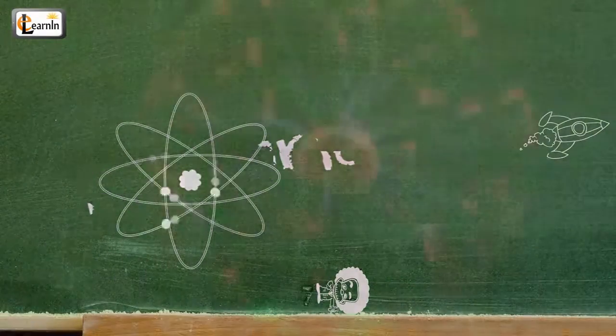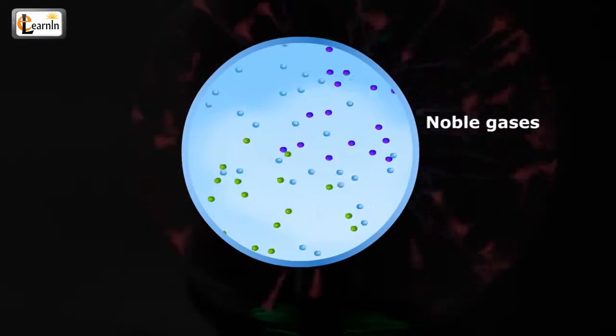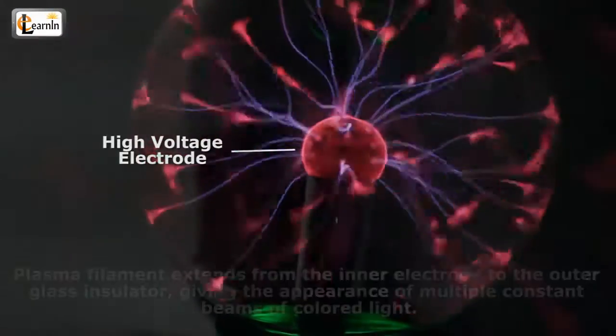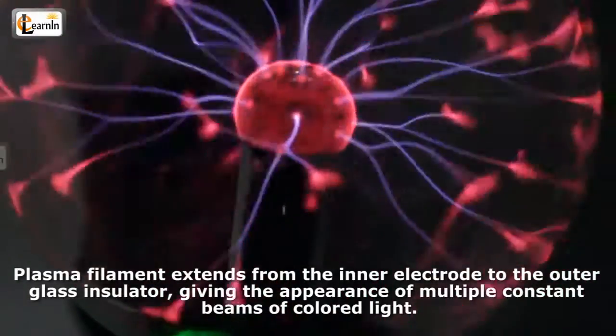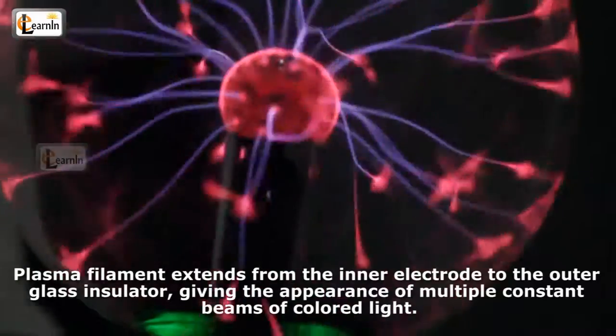A plasma lamp is a clear glass sphere filled with a mixture of various noble gases with a high voltage electrode in the center. Plasma filaments extend from the inner electrode to the outer glass insulator, giving the appearance of multiple constant beams of colored lights.